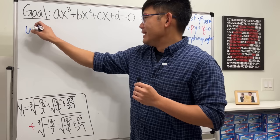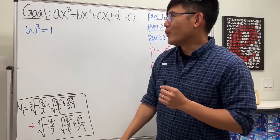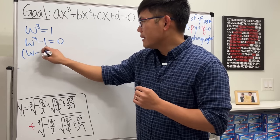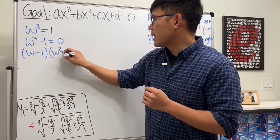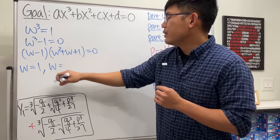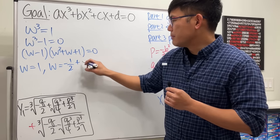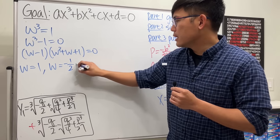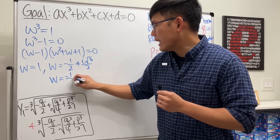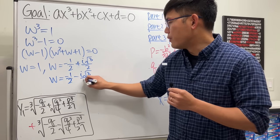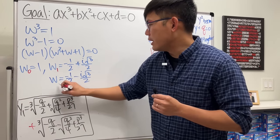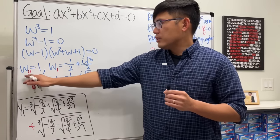The cube roots of unity: some number called ω such that ω³ = 1. Solving ω³ - 1 = 0: we factor as (ω - 1)(ω² + ω + 1) = 0. We get ω = 1, and from the quadratic: ω = -1/2 ± i√3/2. So we have three roots: ω₀ = 1, ω₁ = -1/2 + i√3/2, ω₂ = -1/2 - i√3/2.